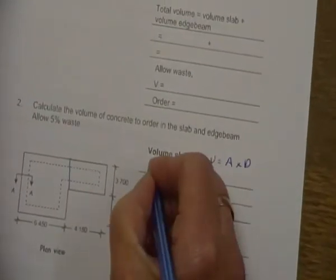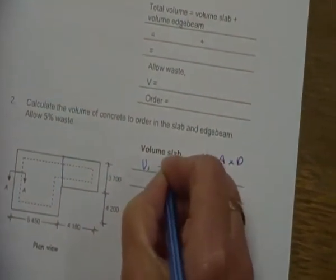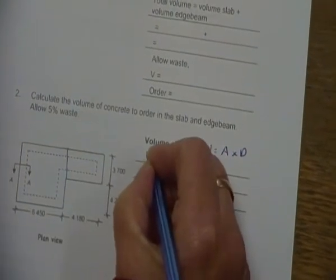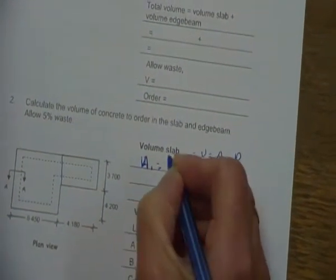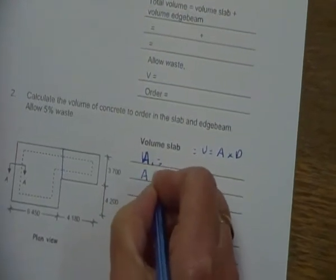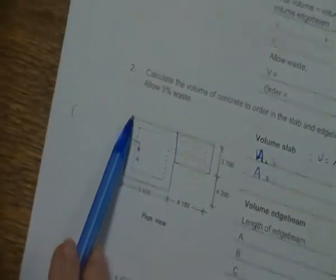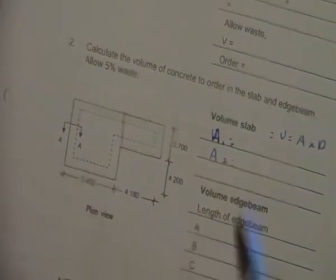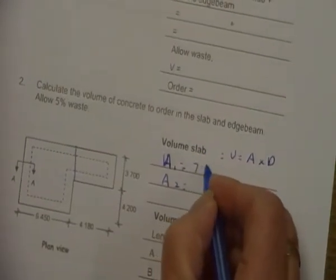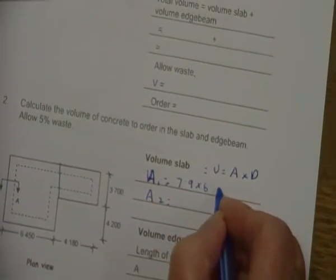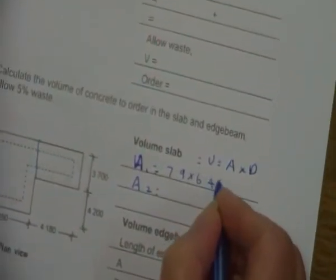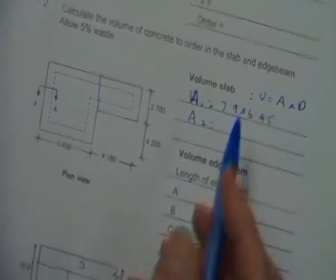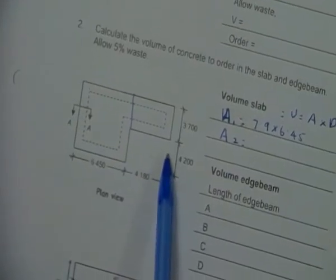The rule we're going to use here is volume equals area times the depth. So I'm going to do area 1 and then area 2. When I look at area 1, I'm looking at the length here: 3.7 plus 4.2, so that's going to give you 7.9 times my width of 6.45.